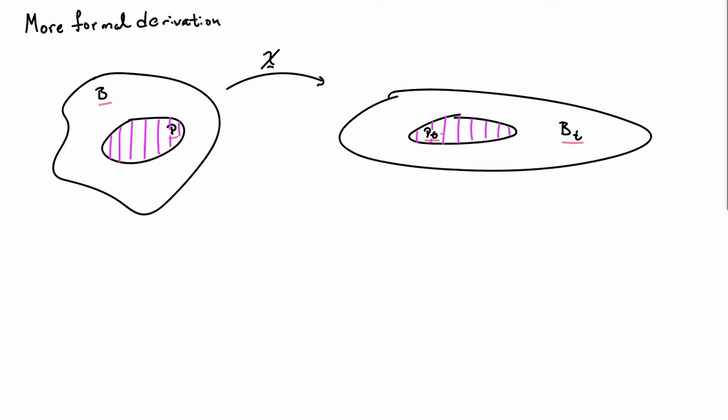Now, if I look at the material points that are located in P, they end up in PT. So, the mass of P is equal to the mass of PT and we can write down the mass of our part using this knowledge in two ways. One is I can take the density, the reference density, and integrate over the reference locations of the material points. And so, if I do that integral, I'll get the mass of P.